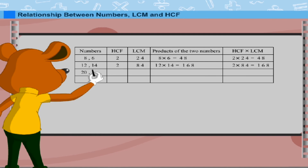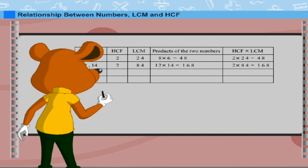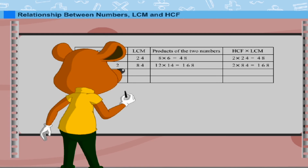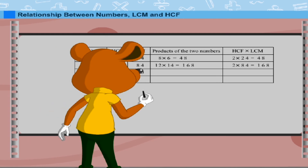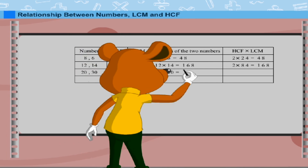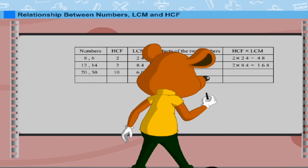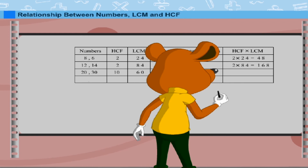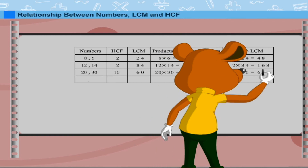The next set of numbers is 20 and 30. The HCF is 10 and the LCM is 60. The product 20 × 30 = 600, and the product of HCF and LCM is also 600.